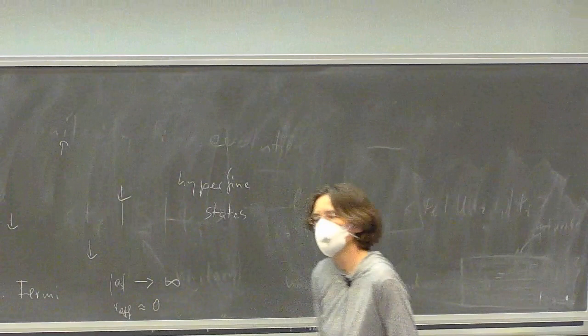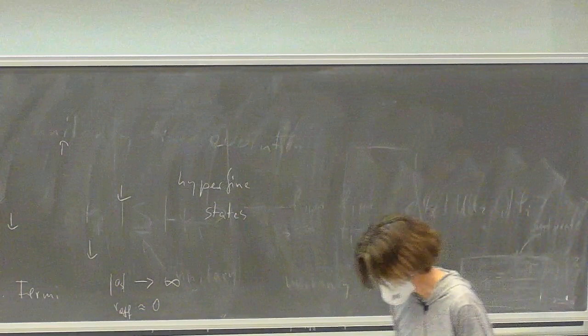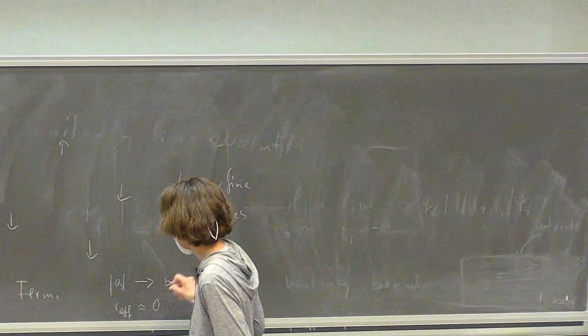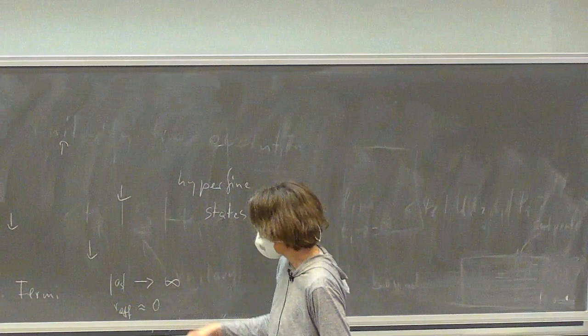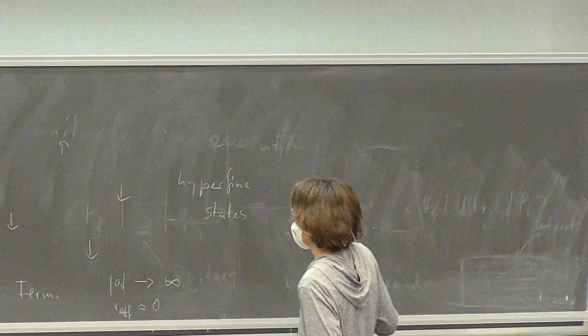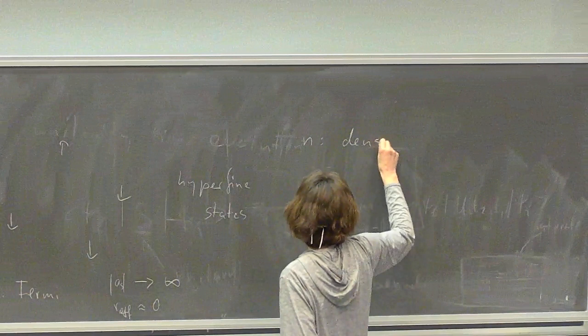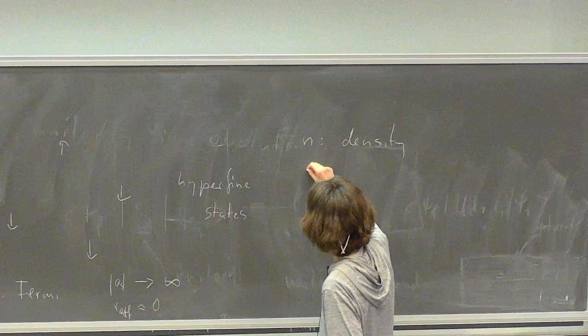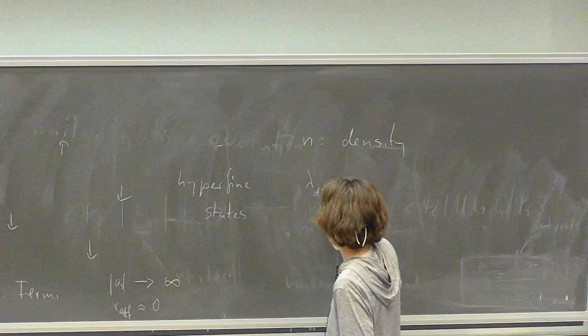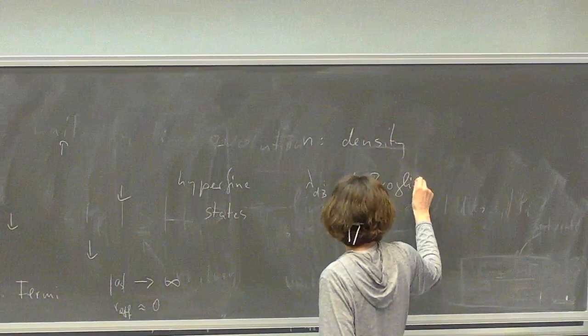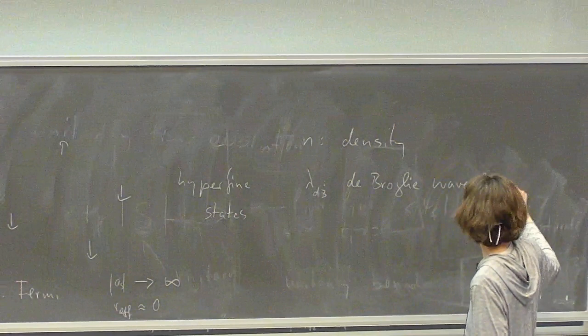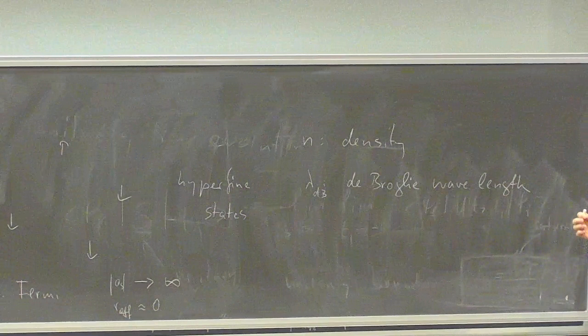If you ask what the parameters in our theory are: the infinite scattering length is gone, it doesn't set anything. The effective range is zero, so that doesn't set a length scale either. What we have left is a density — or the average particle spacing — and if we have temperature, we also have the de Broglie wavelength. Those are the length scales we can identify.